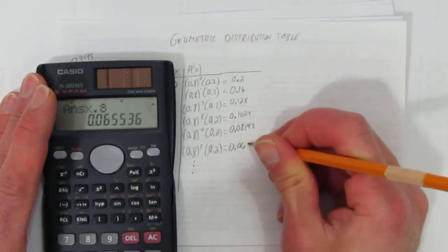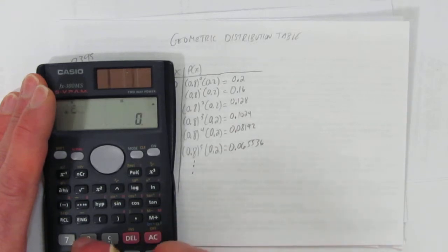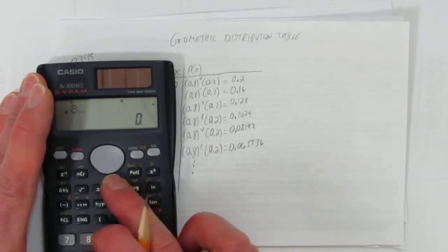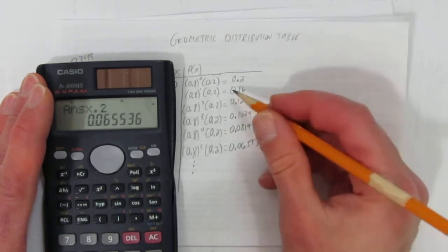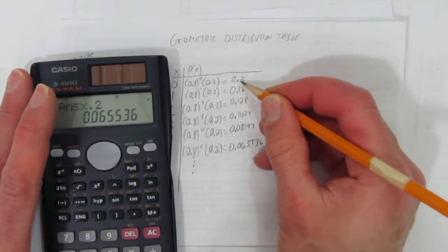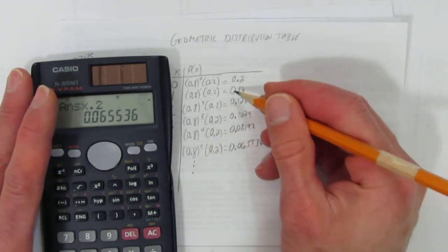Let's try it the other way. Just go 0.8 to the power of 5, then times 0.2. And you get that number. That is, you can just calculate the first one and then keep timesing them by 0.8. Or you can type this in each time. Either way,